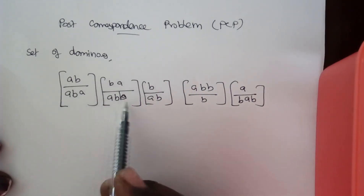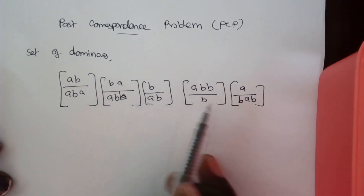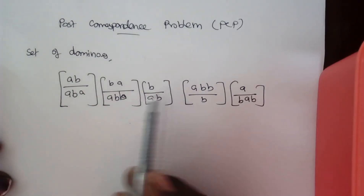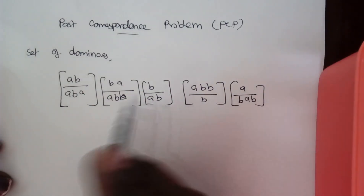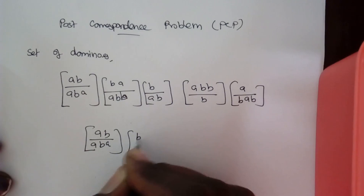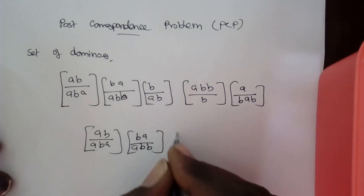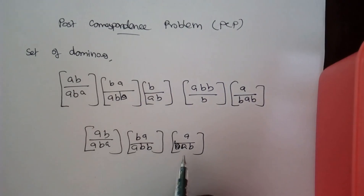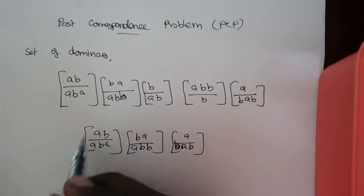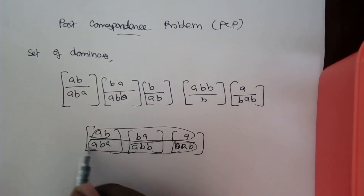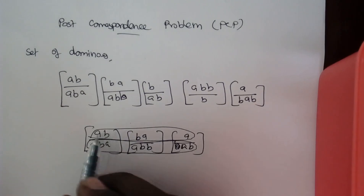We will be given with some set of dominoes, and we want to rearrange these set of dominoes. We may either rearrange within this or we can have some n number of repetitions of a single domino too. After arranging, we have to combine all the strings formed by the numerators and all the strings formed by combining the denominators.